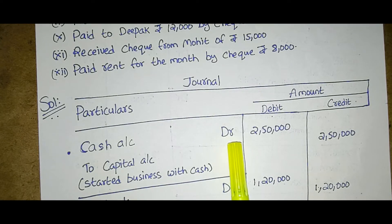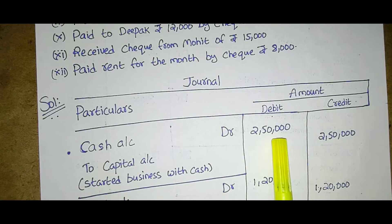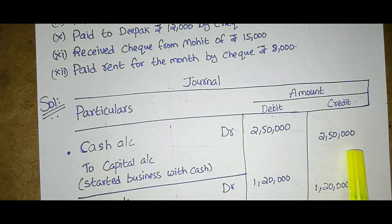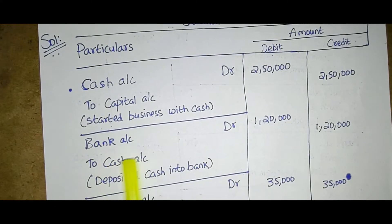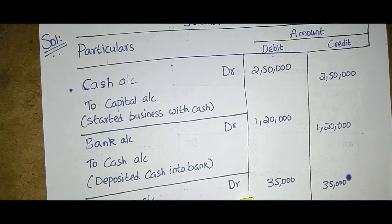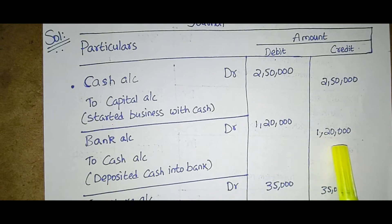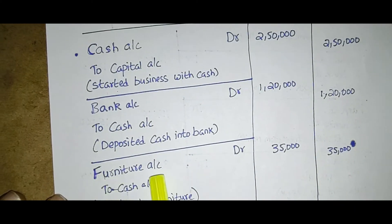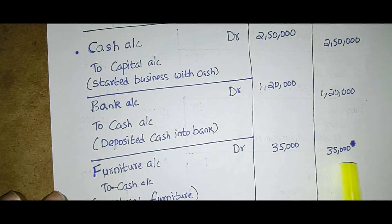Cash account Dr. to capital account — started business with cash two lakhs fifty thousand; debit two lakhs fifty thousand, credit two lakhs fifty thousand. Next: bank account Dr. to cash account — deposited cash into bank; one lakh twenty thousand debit and one lakh twenty thousand credit. Furniture account Dr. to cash account — purchased furniture; thirty-five thousand debit and thirty-five thousand credit.